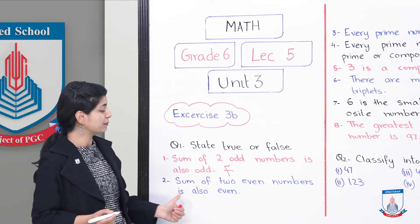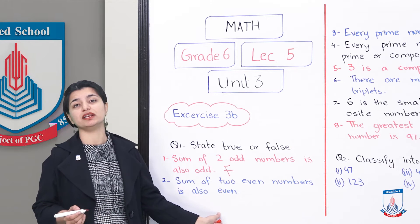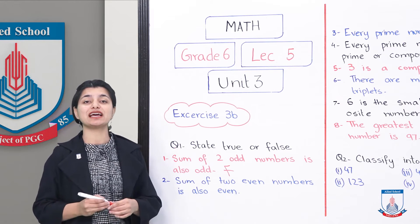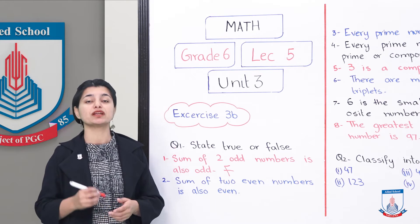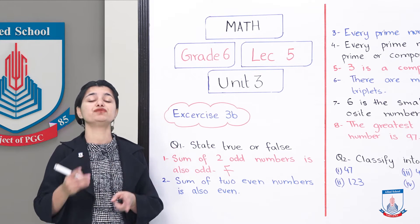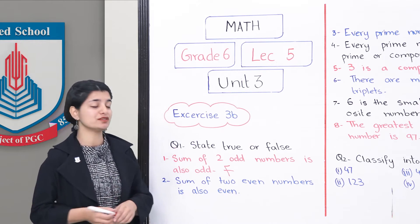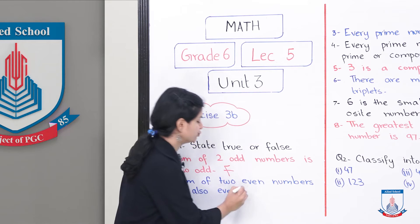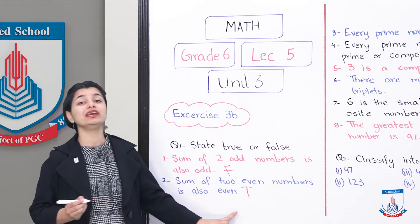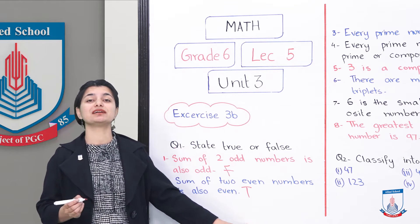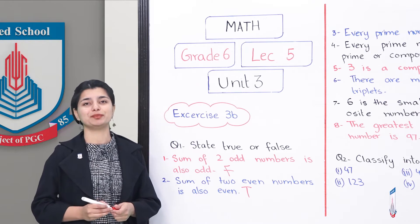The next statement: the sum of two even numbers is also even. For example, 4 plus 4 is 8, and 6 plus 6 is 12. Both results are even. So this is true — if you add two even numbers, your answer will always be even.